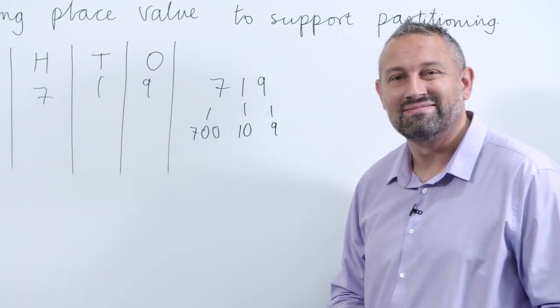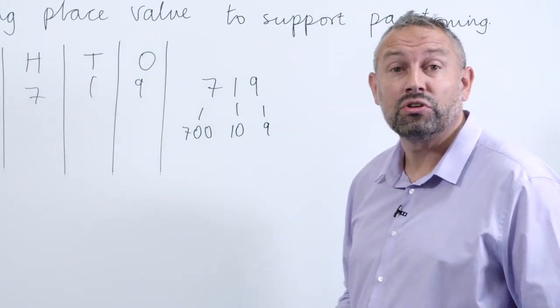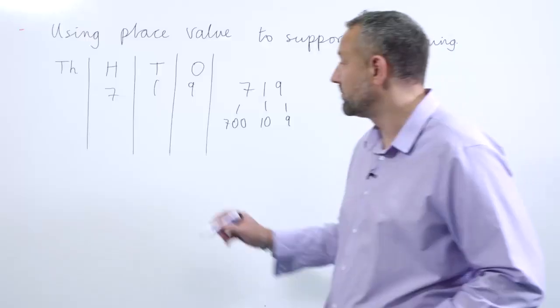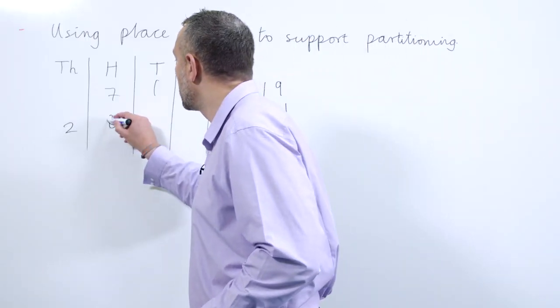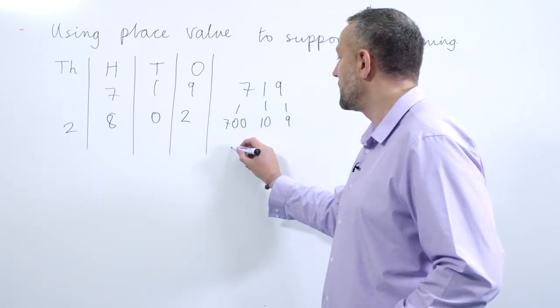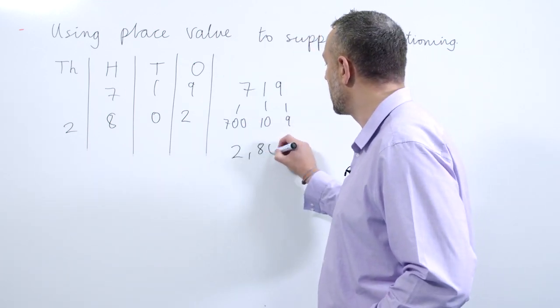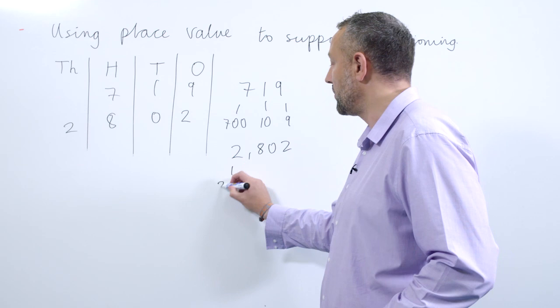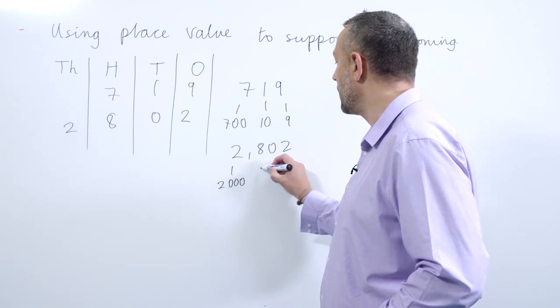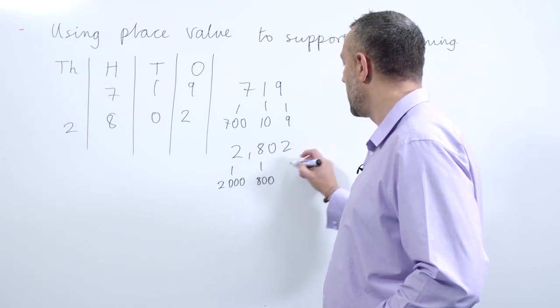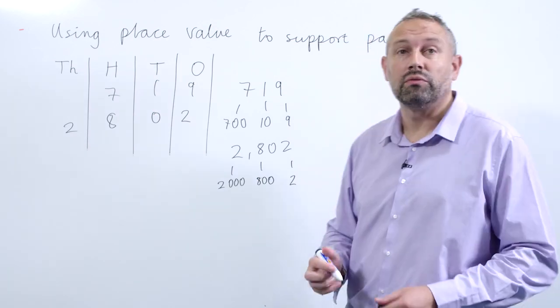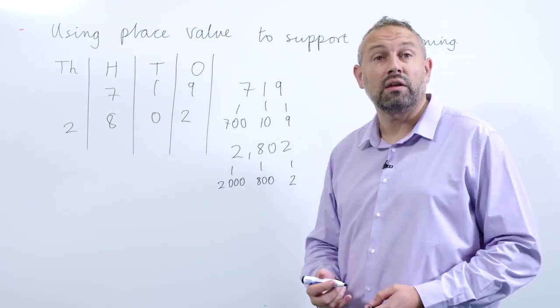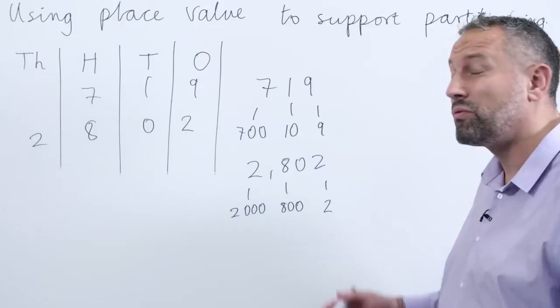Let's look at another number: two thousand eight hundred and two. We use a similar principle. It is made up of two thousands, eight hundreds, and two ones.